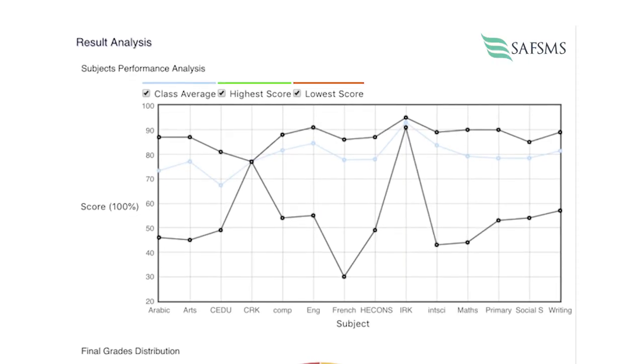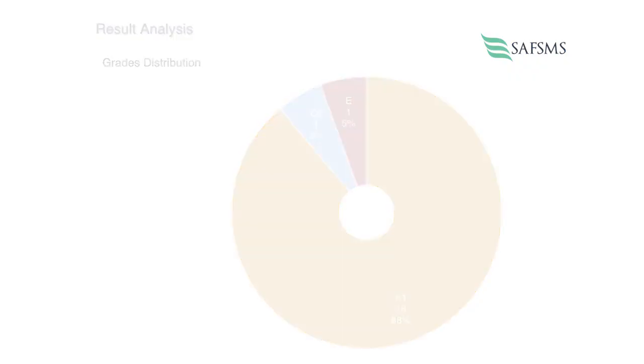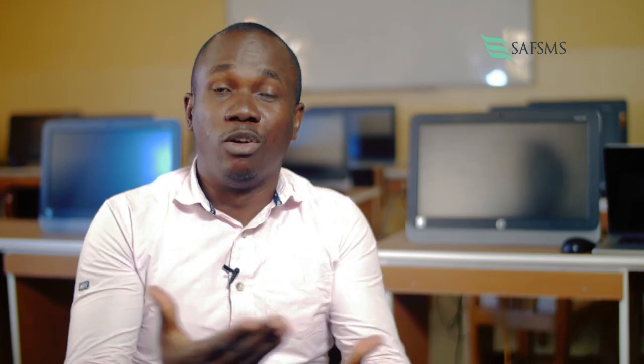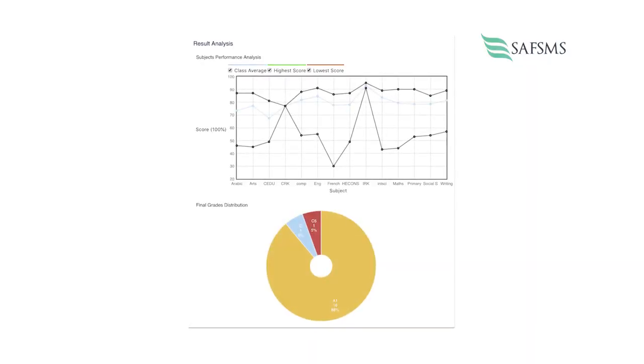As examination officer of the school, the module of SAF SMS that I like most is the analytical aspect of it. With SAF SMS, you have access to your data and it can help you analyze it. Just on the click of a button, you get all the records you need. It makes the work simplified, and merely looking at the results of each student, you're able to analyze and give reports of what you want to do.